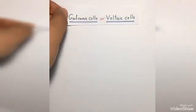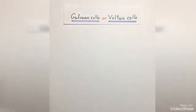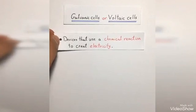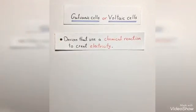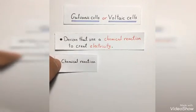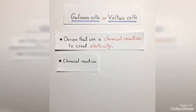In this video we are going to talk about galvanic cells which are also called voltaic cells. Galvanic or voltaic cells are devices that use a chemical reaction to create electricity. Specifically, the type of chemical reaction that they use is called an oxidation reduction reaction or a redox reaction.